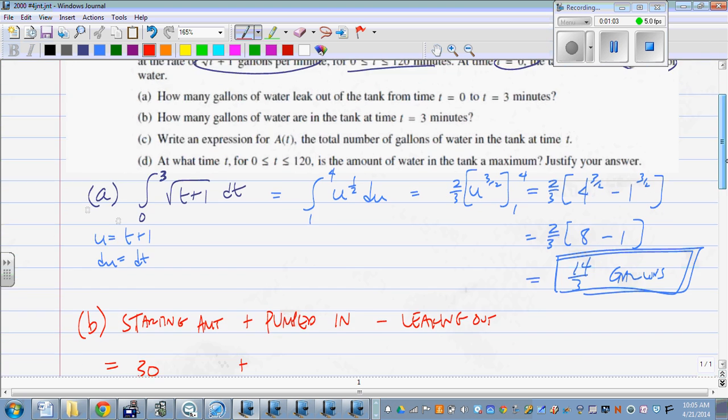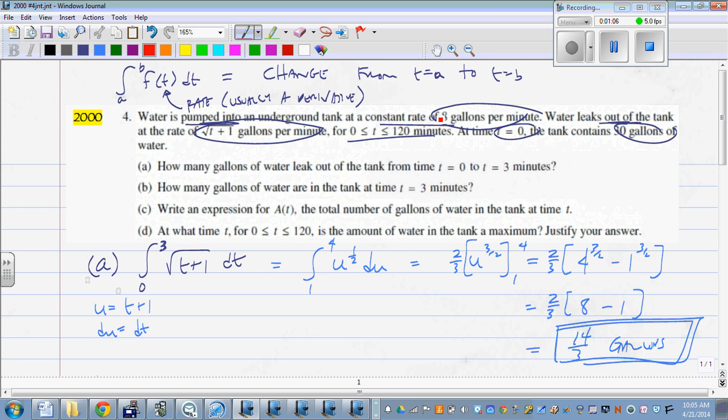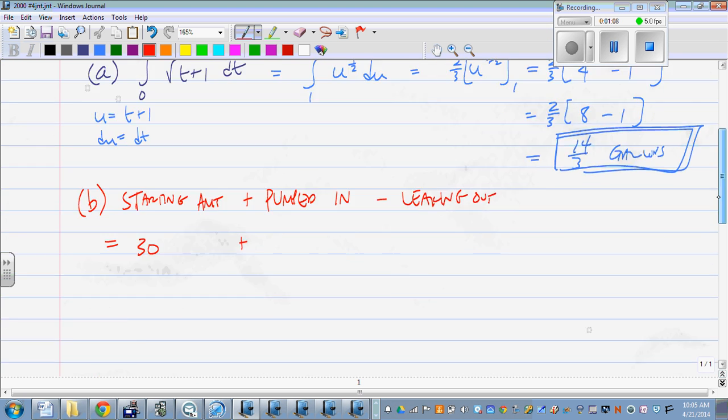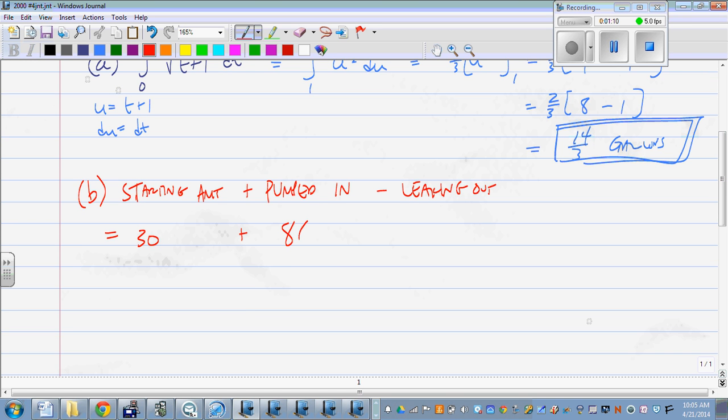The amount pumped in, that was a constant rate of eight gallons per minute. So if we're talking about three minutes, we're just taking eight times three.